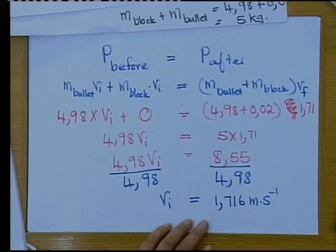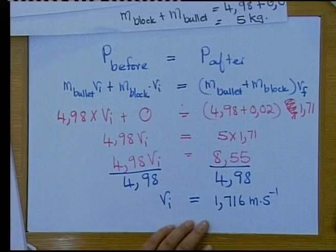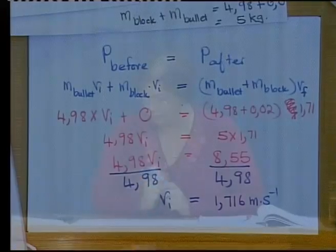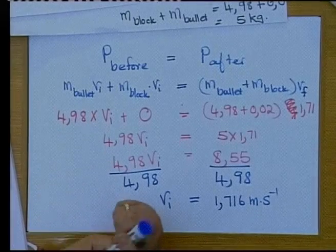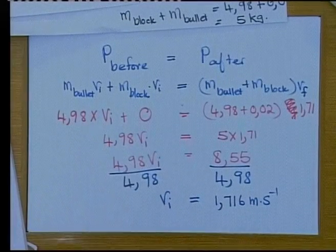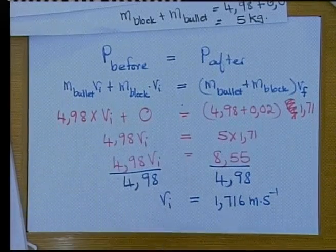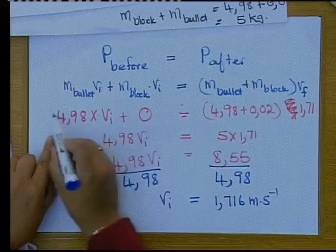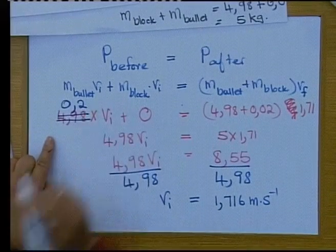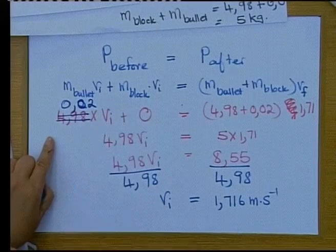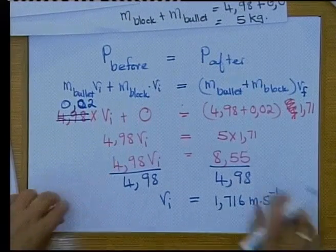We can see there wasn't much difference in the velocity — and that's where our mistake is. The mass of the bullet is not 4.98; that just shows you can't do things too quickly. The mass of the bullet is only 0.02 kg. That's why our answer came out the same as the final velocity.